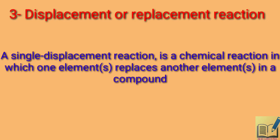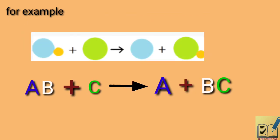Single displacement or replacement reaction: a single displacement reaction is a chemical reaction in which one element replaces another element in a compound. For example, A is a guy who belongs to a middle-class family — he is gentle, good, and lives happily. He met B, and they both like each other and become friends. Suddenly one day, C comes along, who belongs to a richer family, and he takes B away from A. Now B will go with C and form a bond, while A will be left alone. This is what happens in a single replacement reaction.